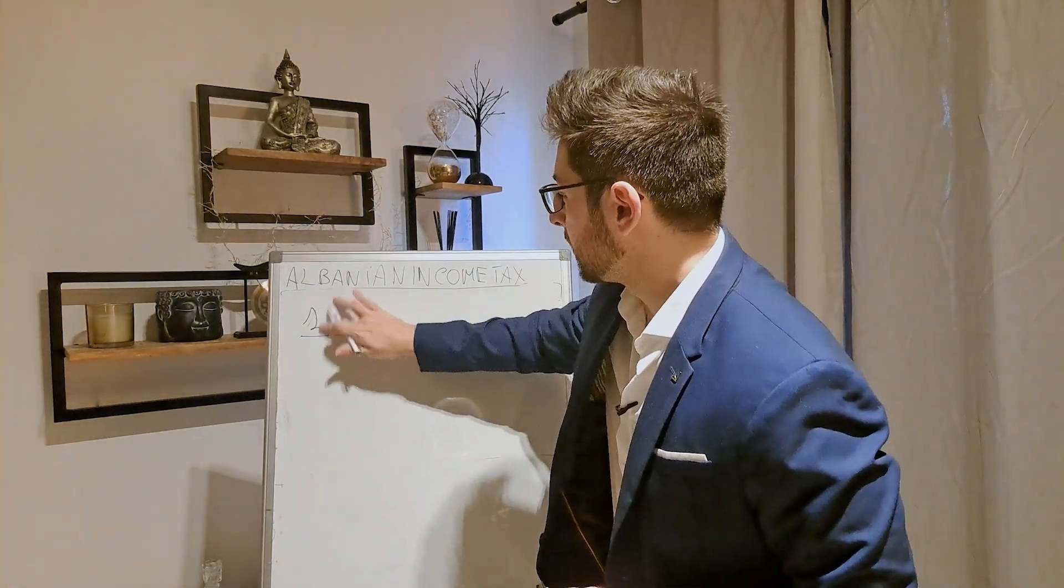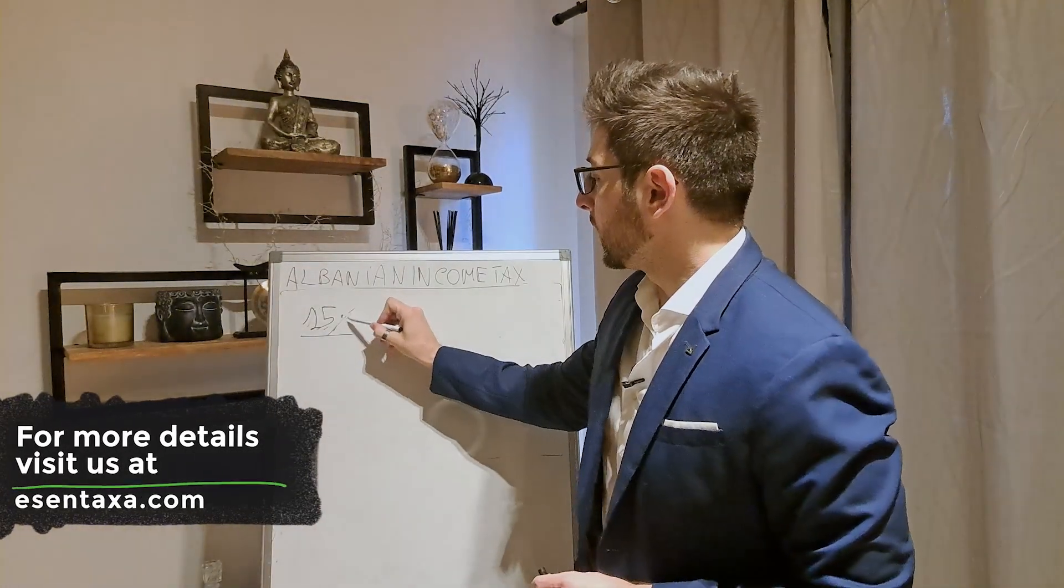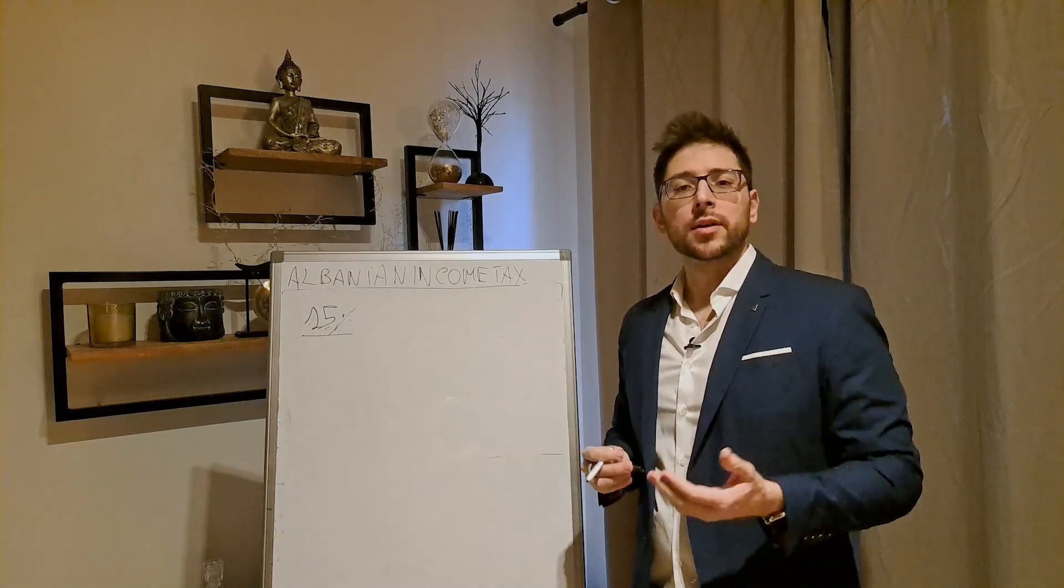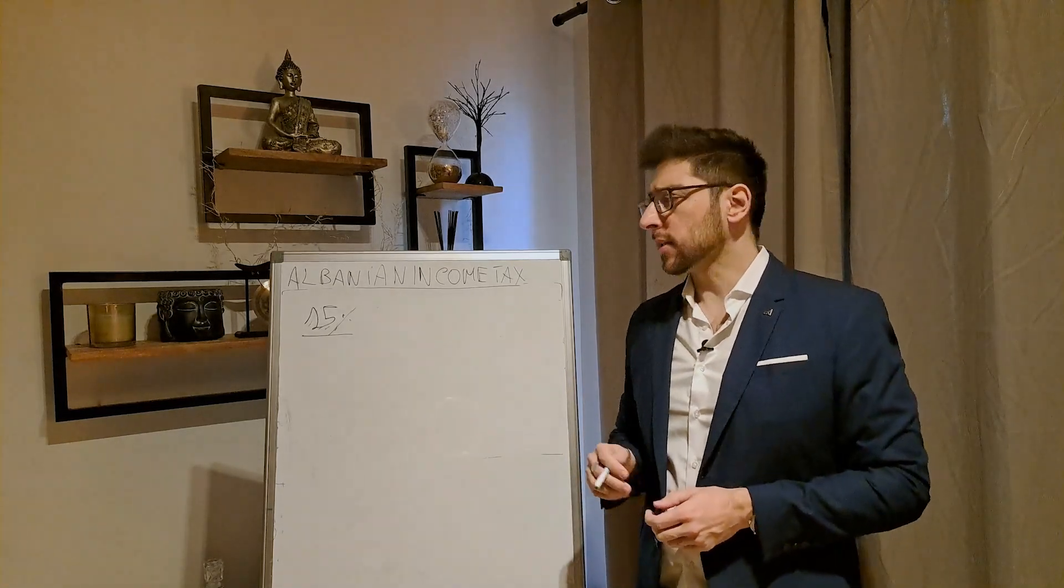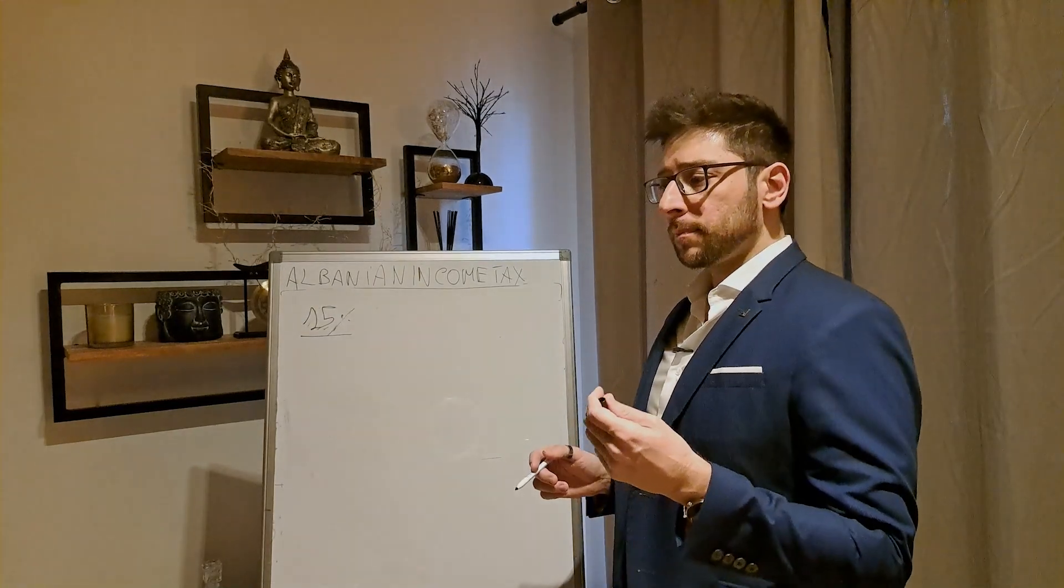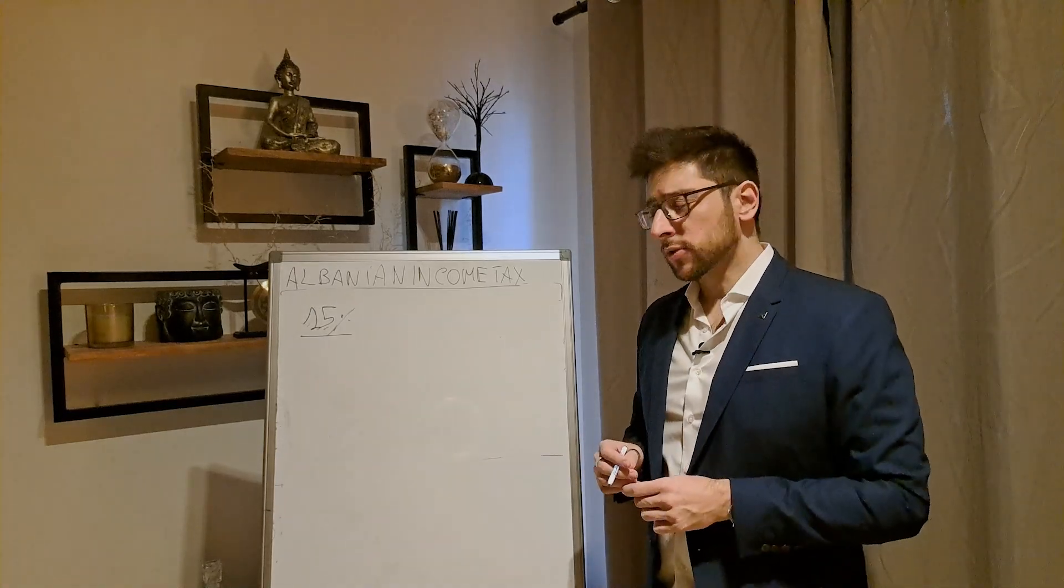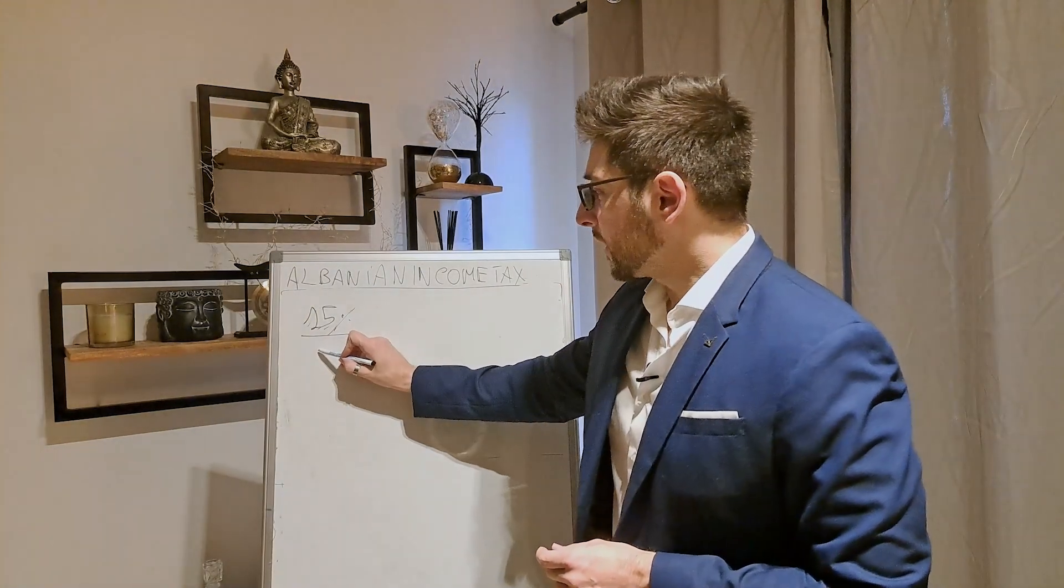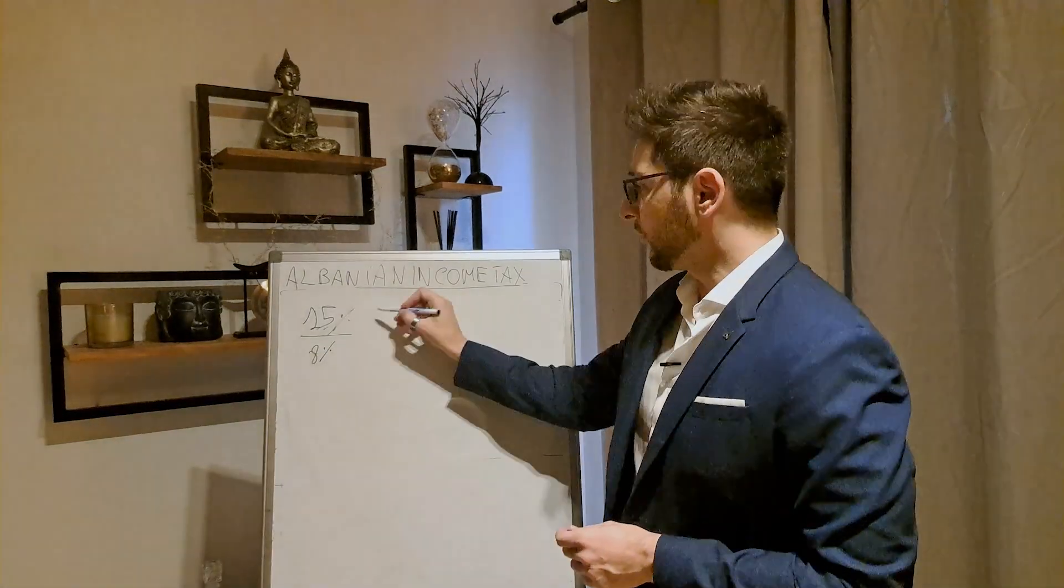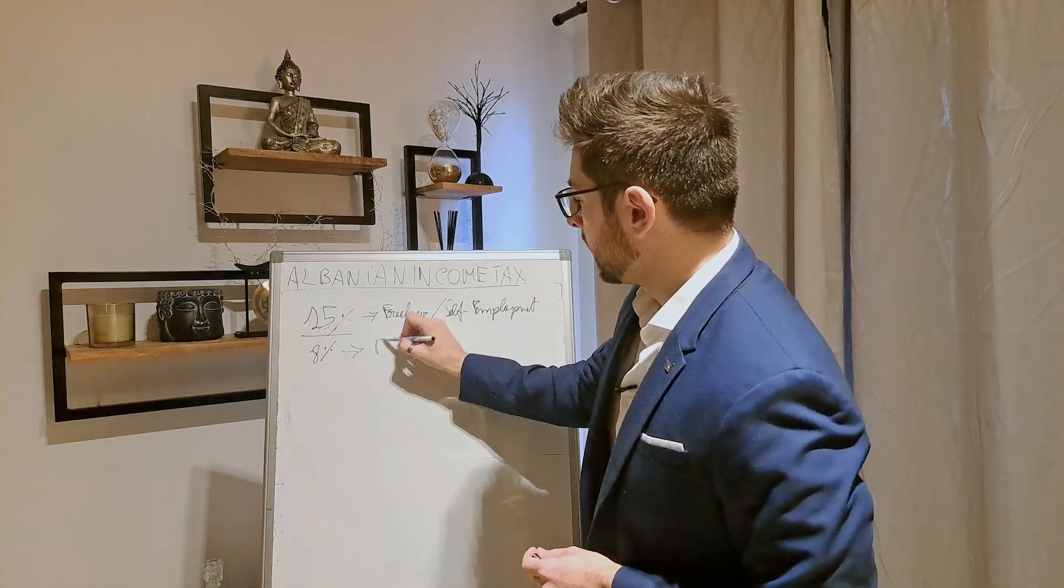So 15%, which basically it's applicable on all your profits. So you first deduct your coherent expenses related to your business, and then you apply the 15% flat rate, okay? If you are perceiving dividend from an Albanian entity, things are getting more interesting. You are basically taxed at only 8%. So this is for freelancer or self-employed activity, and this one are dividends.